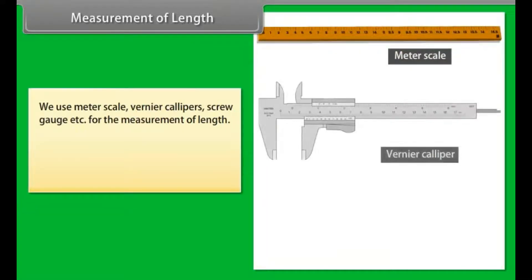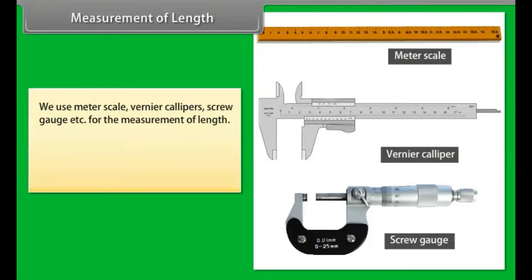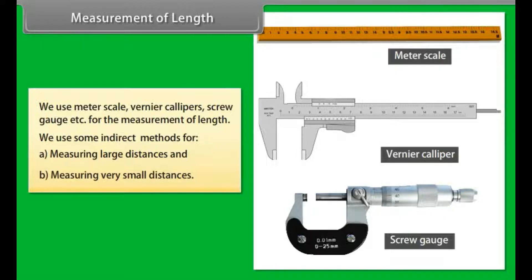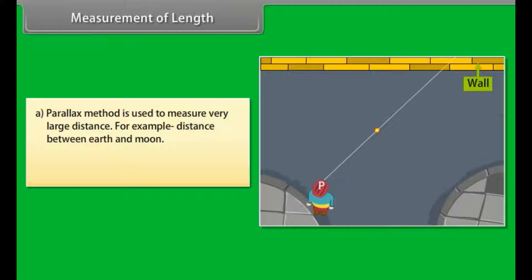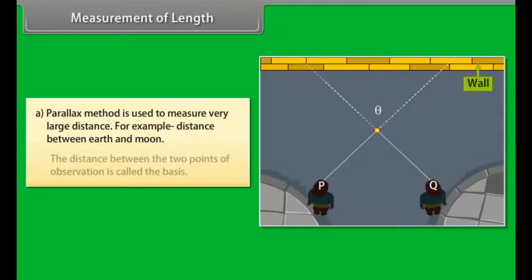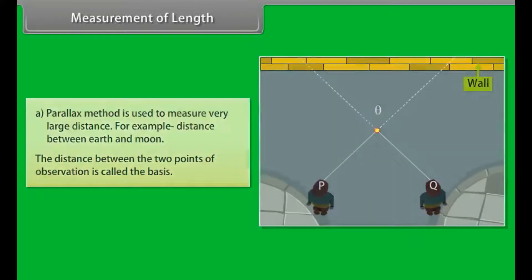Measurement of length. As you know, we use meter scale, Vernier calipers, screw gauge, etc. for the measurement of length. We use some indirect methods for: A) measuring large distances and B) measuring very small distances. Parallax method is used to measure very large distance, for example distance between earth and moon. Let us understand with an example. A girl is observing the rod against a wall from two different points P and Q. She notices that the position of the rod seems to change with respect to the wall. This is known as parallax. The distance between P and Q is called basis.